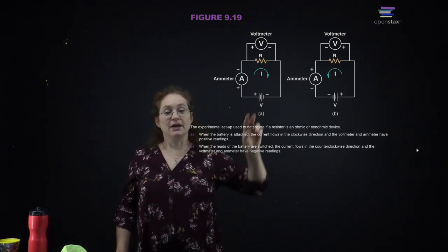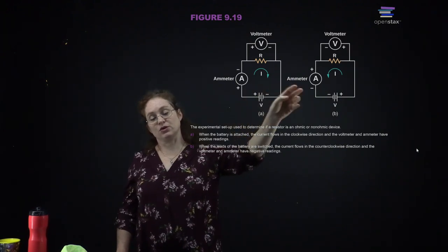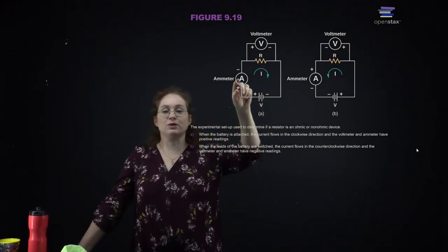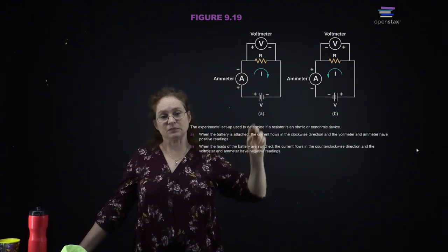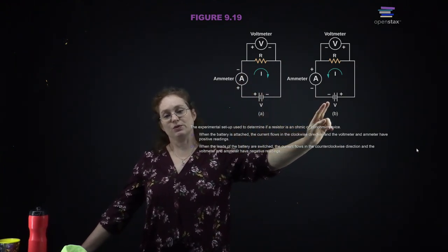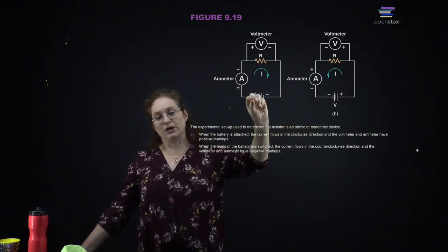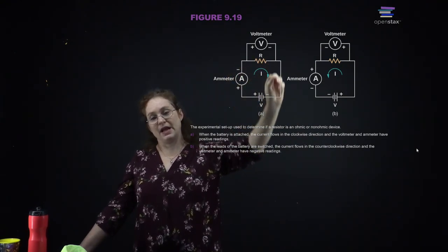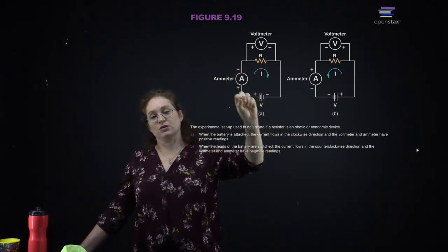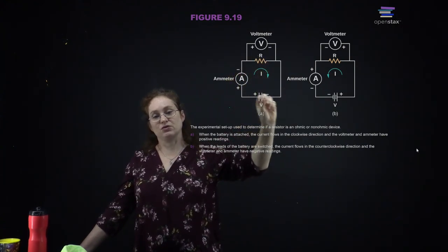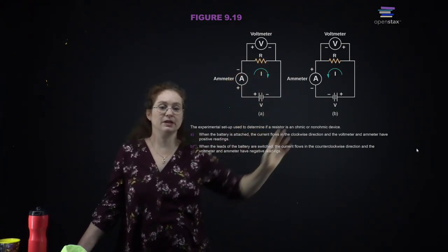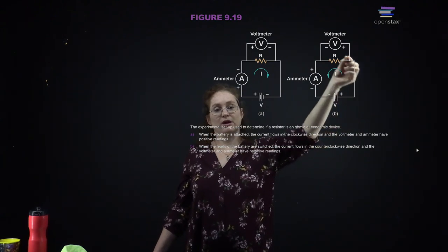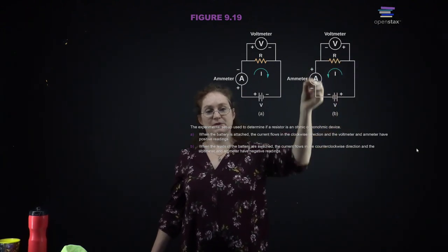These two circuits show schematic diagrams with an ammeter and a voltmeter. Current wants to travel from positive to negative potentials, so it travels around in one direction. If you switch the terminals, the current travels in the opposite direction.